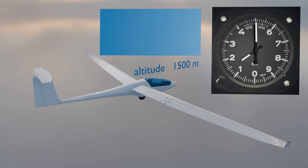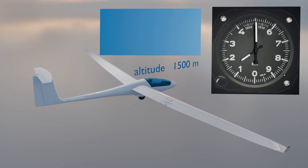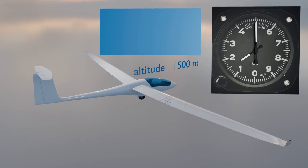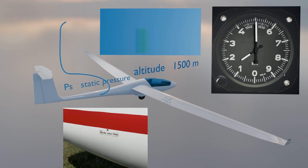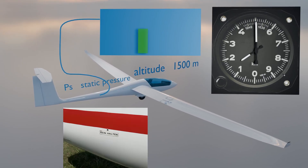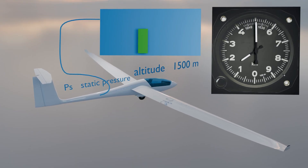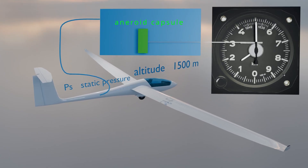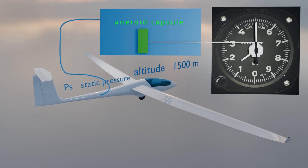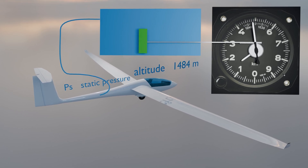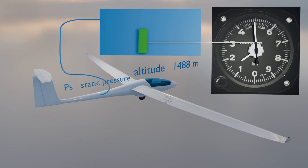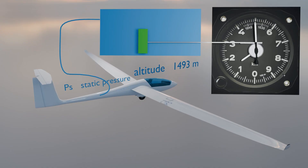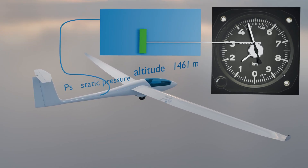The altimeter measures changes in air pressure with increasing altitude, using the static pressure system — a pressure port on the aircraft's exterior that senses surrounding static air pressure. Inside the altimeter is a sealed, airless aneroid capsule. This capsule changes its shape depending on the surrounding pressure — it expands or contracts. This mechanical movement is transferred via a delicate mechanism to a needle indicating altitude. The higher we fly, the lower the outside pressure, and the more the capsule expands.